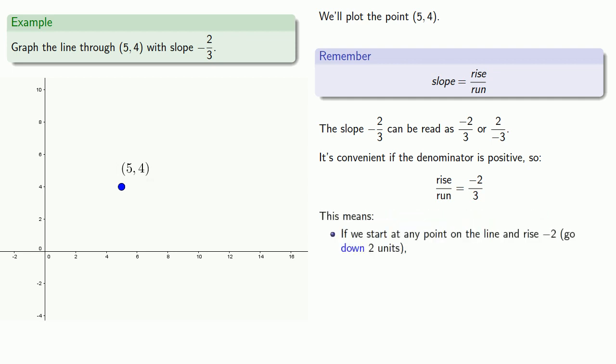And what this means is that if we start at any point on the line and rise minus 2, we go down 2 units, then run 3 units to the right, we'll get to another point of the line.